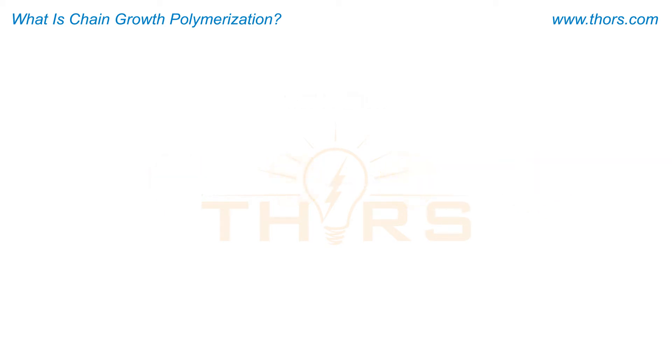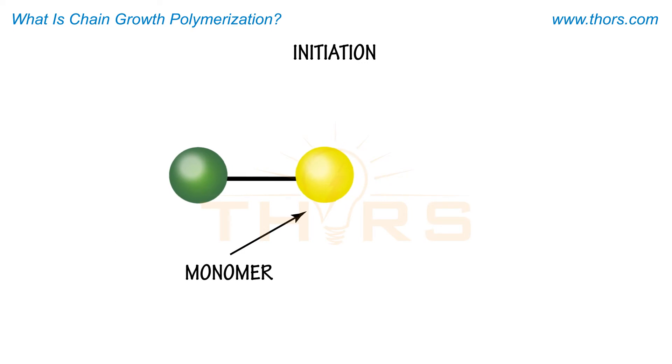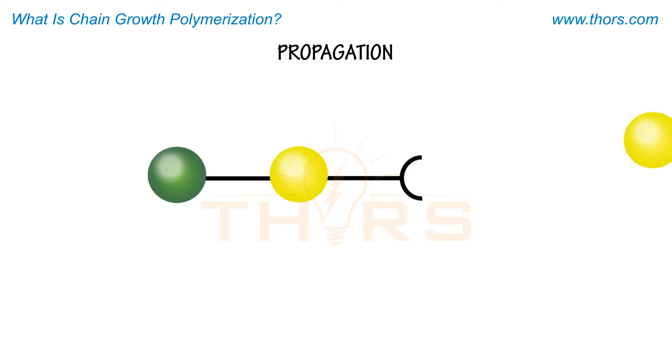In this example of a living polymerization, chain growth begins during initiation where an initiator with an active center reacts with a monomer to begin an actively growing polymer chain. The new polymer chain continues to grow during propagation.